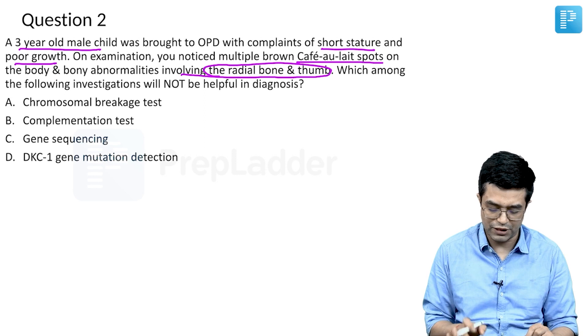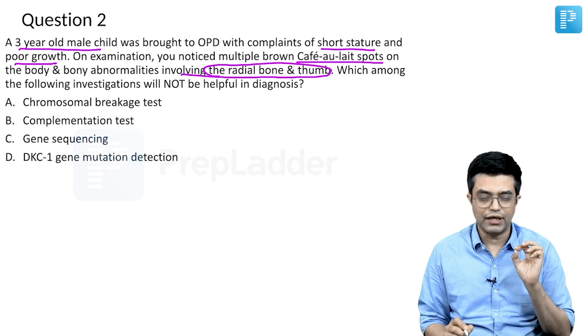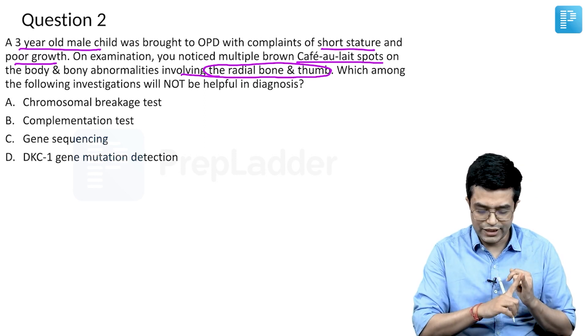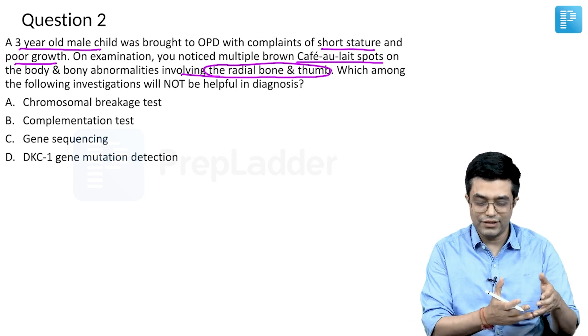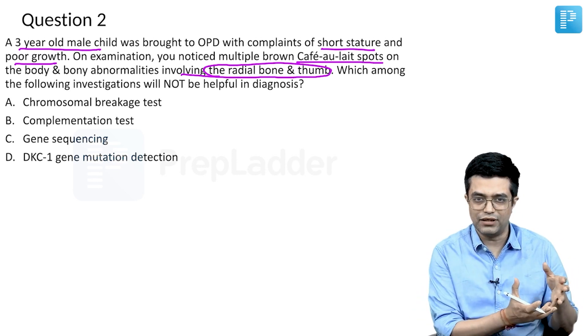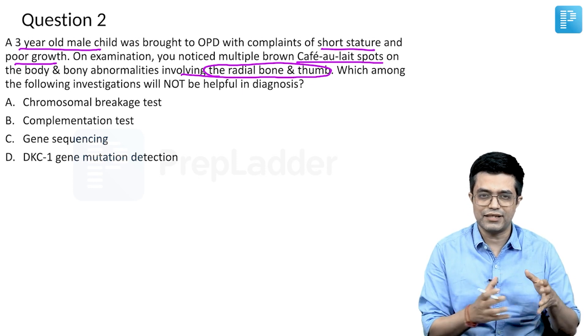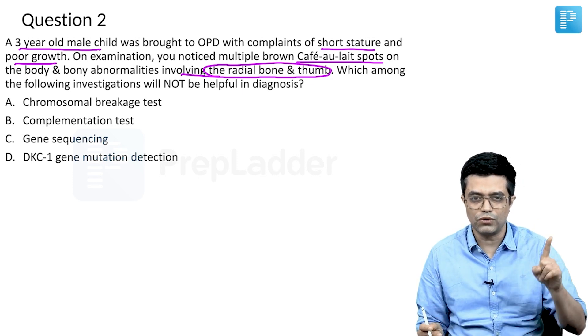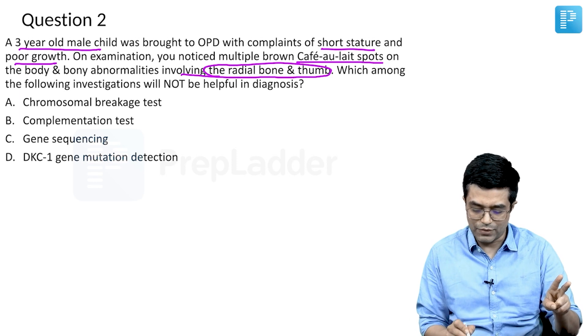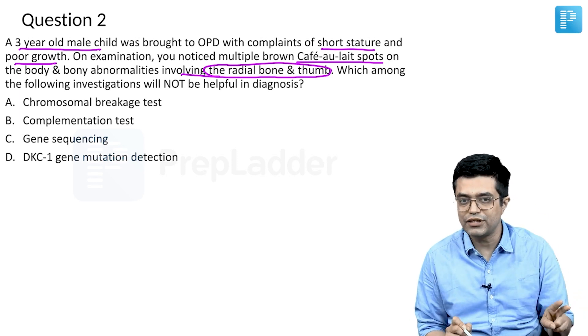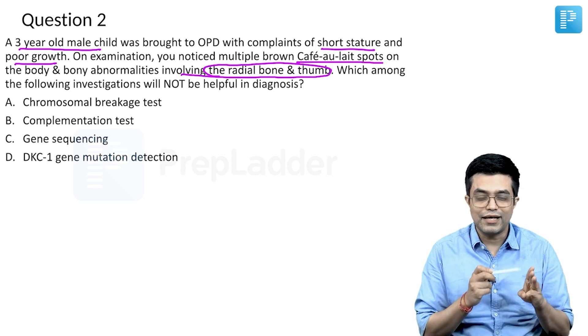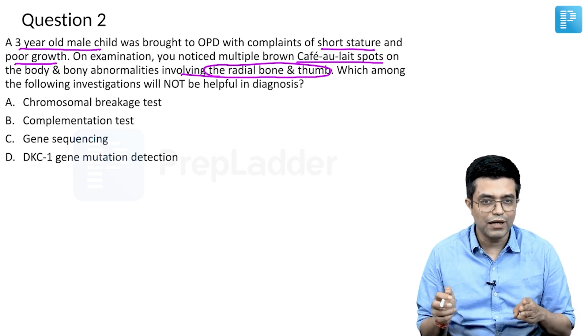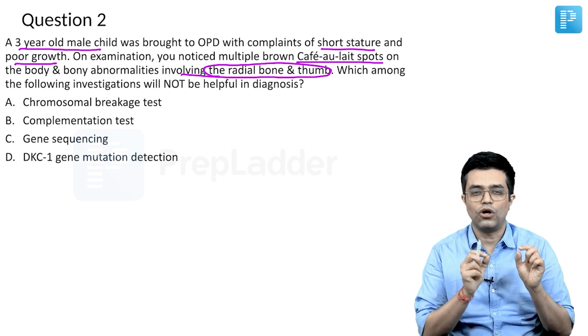Which among the following investigations will not be helpful in diagnosis? We have four options. First we need to make the diagnosis: short stature and poor growth indicate developmental retardation in terms of bodily growth. Number two, there is occurrence of skin manifestations mainly hyperpigmentation.